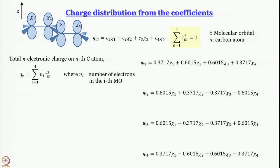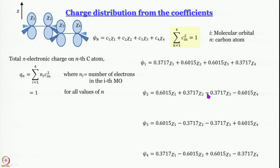Taking n = 2 as an example: 2×(0.6015)² + 2×(0.3717)² turns out to be 1. Do this for any carbon atom and it turns out to be 1. This tells us there is uniform distribution of pi electrons over the 4 carbon atoms — no polarization. This is what we had inferred from valence bond theory and common sense, but now we arrive at it from the charge distribution calculated from the atomic orbital coefficients.